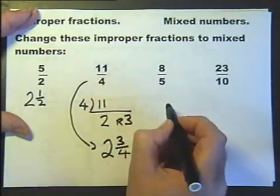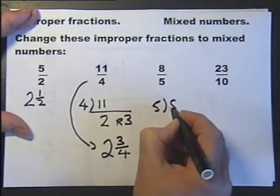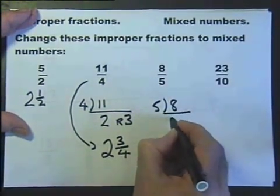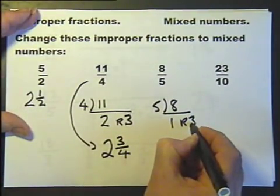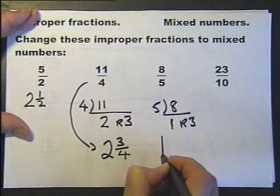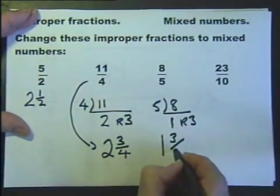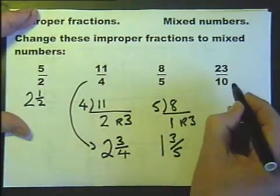Let's look at this one. How many 5s are there in 8? Well there's one 5 in 8 and a remainder of 3. So that gives us 1 whole 1 and 3 fifths.